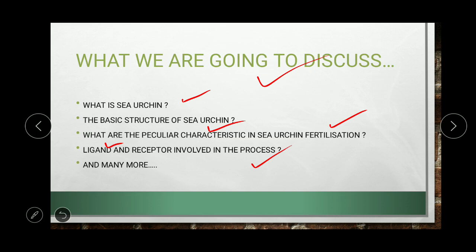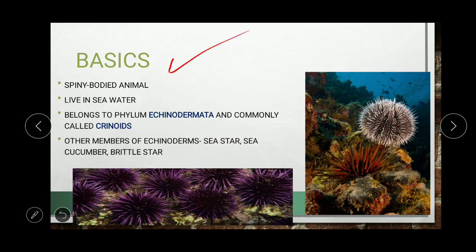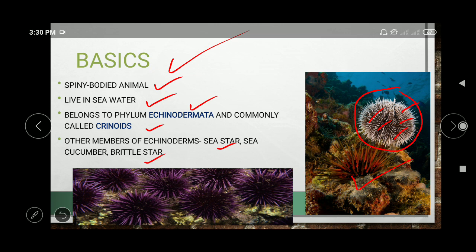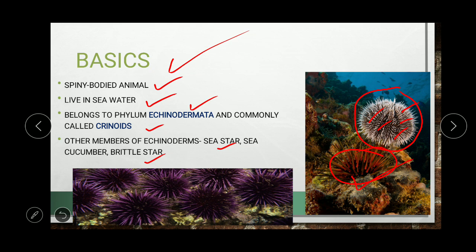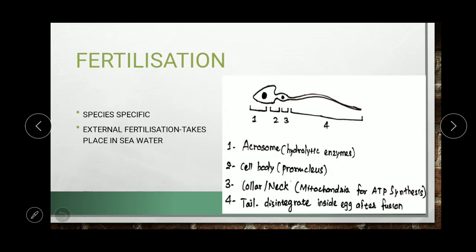Sea urchins are spiny-bodied animals, as you can see here — small spines arising from the body throughout. They are aquatic marine organisms residing in sea water. They belong to phylum Echinodermata and are commonly called sea urchins. Other members of the echinoderms include sea star, sea cucumber, brittle star, etc.